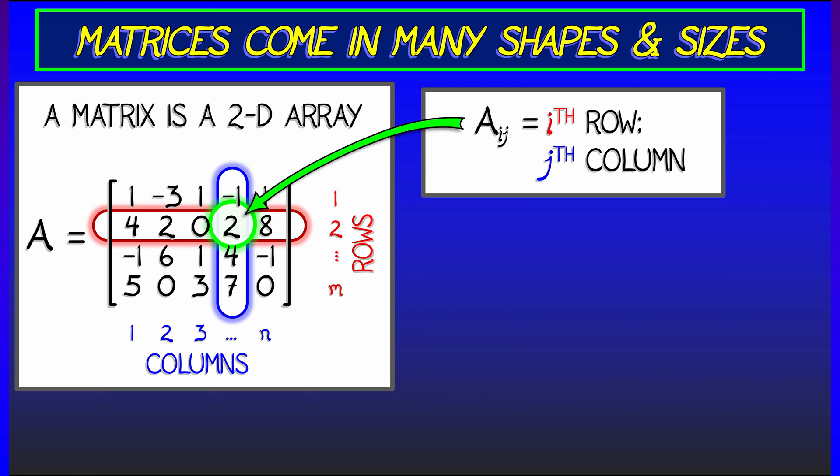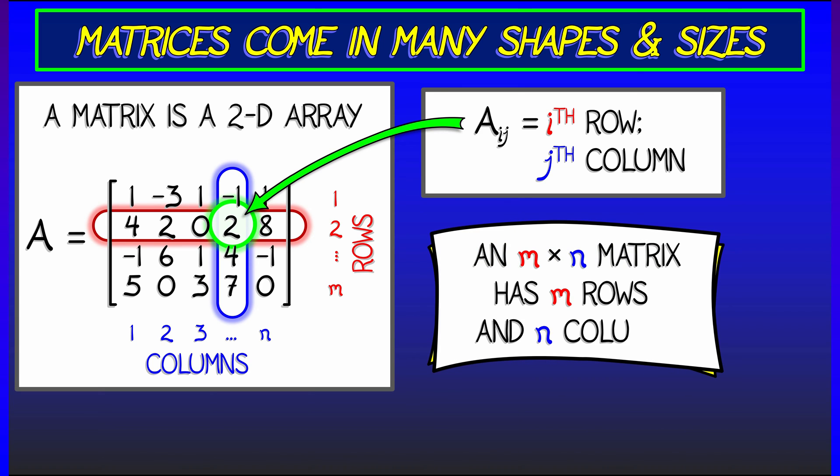In general, we say that an m by n matrix is one with m rows and n columns. And among these, there are a few special shapes, such as a row matrix,